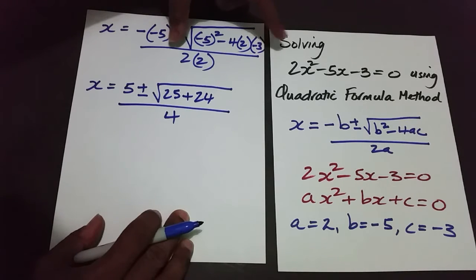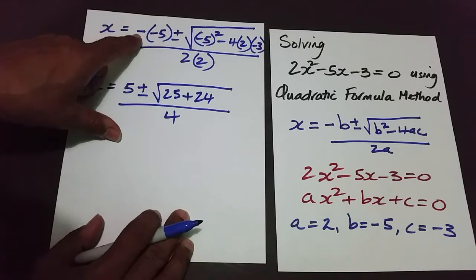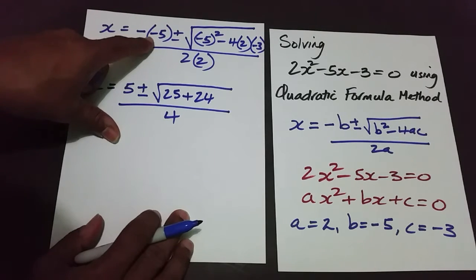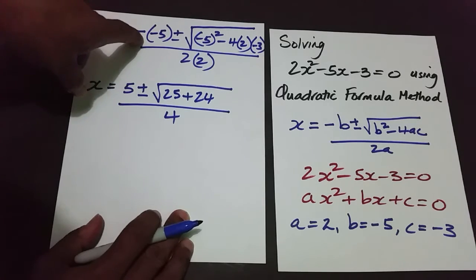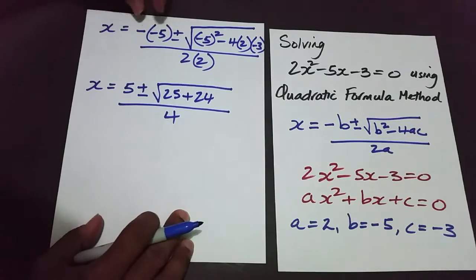If you're using the quadratic formula and you're not getting the answer you're supposed to get — that you got with factorization, for example — check here, because normally this is where the mistake is. Sometimes instead of having two negatives you have one. Remember: the first negative belongs to the formula, and the value of b is negative 5, so we have two negatives here. Be careful with this part and with inside the square root.